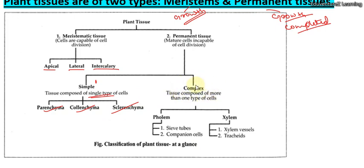Then in complex tissues we have phloem and xylem. We have already had quite a discussion about xylem and phloem in Standards 7 and 8. Xylem and phloem come under complex tissues.